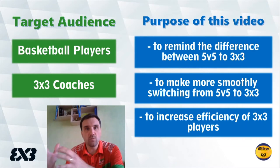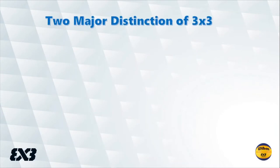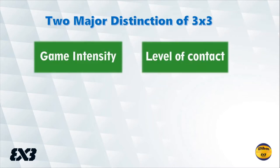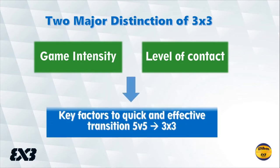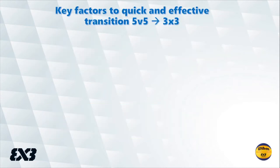The basic goal of this video is to make the switch from 5-on-5 to 3-on-3 basketball smoother. We start with the major distinctions of the 3-on-3 game — what principally separates 5-on-5 and 3-on-3. Of course there are two major factors: game intensity and the level of contact allowed.